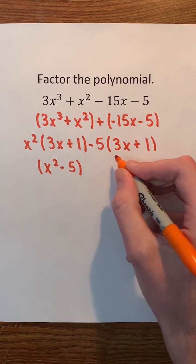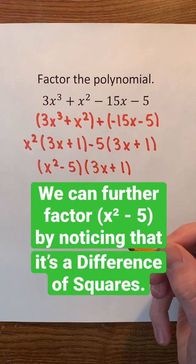We can further factor x squared minus 5 by noticing that it's a difference of squares. So, we'll factor it as x minus the square root of 5 and x plus the square root of 5.